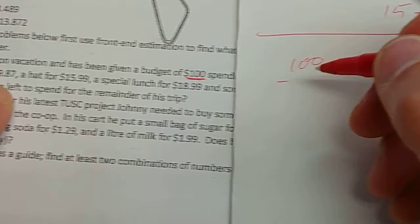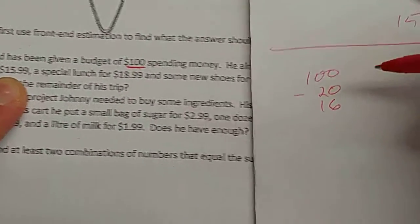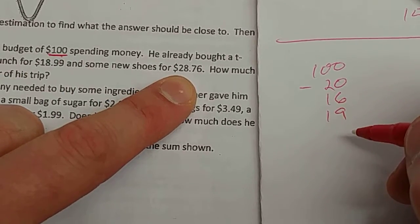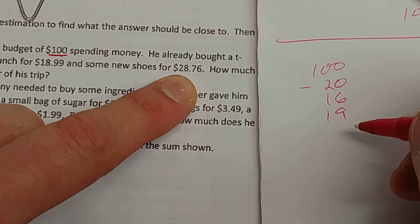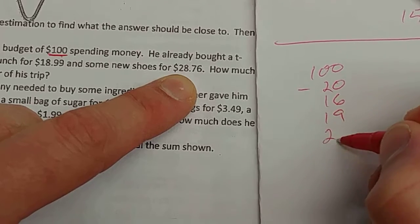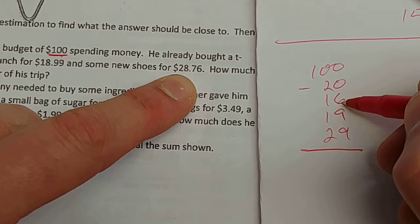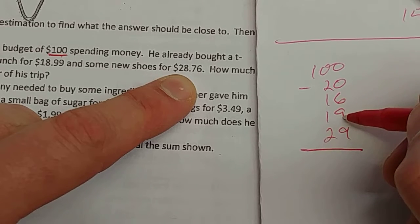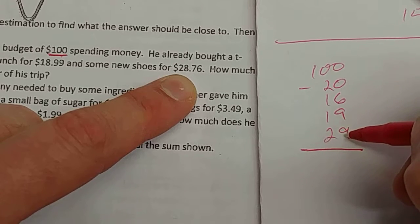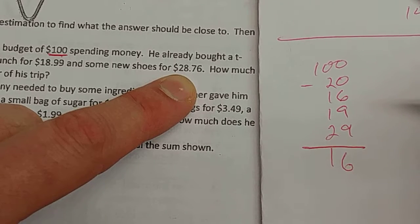And then we're going to start minusing all the purchases that he made. So let's use that front-end estimation. We had $100. Then we're going to minus, let's see, was $19.87. So minus what? About $20. Minus about $16. Minus about $19. And minus about, what should I put for $28.76? What's that close to? $29. Okay. $29. So if we take that down, let's see, that's going to be $80, $64, $54, $45, $25. I think that's about $16.